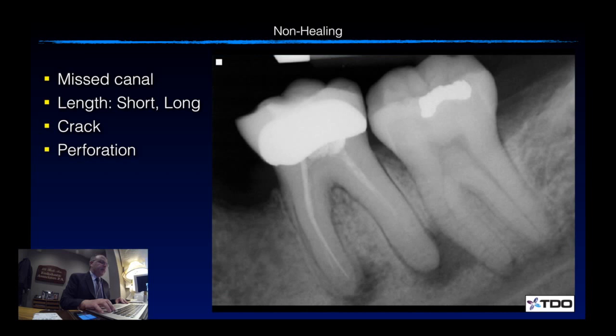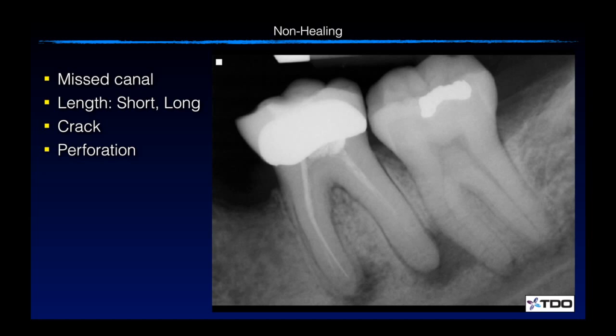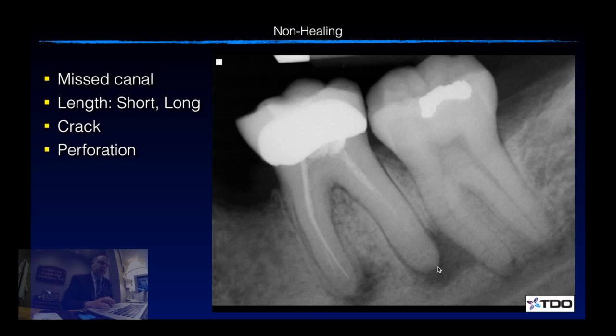When you look at a case like this that came in with acute alveolar abscess, there's obviously apical periodontitis going on here. This is a previously treated tooth where you have less than ideal length here in the distal root. You have tissue left behind, and this is causing the problem here.